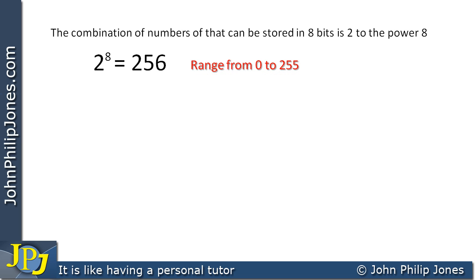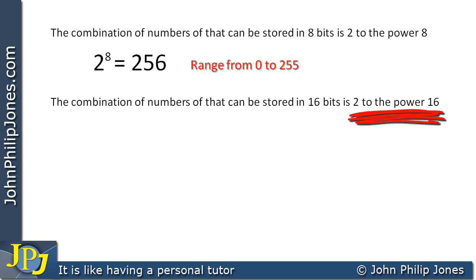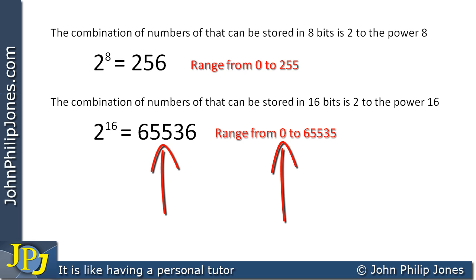Now, if we now double the number of bits, i.e. go to 16 bits, then we can say that the combination of numbers that can be represented is 2, which is the base of binary again, raised to the power 16, which is 2 times 2 times 2, 16 times, as shown here. And the number of combinations we can achieve with 2 to the 16 is 65,536. Now, we start at 0, so the biggest number must obviously be 1 less than this. So the range is from 0 to 65,535, where 65,535 is the biggest number we can store in 16 bits, the biggest positive number.